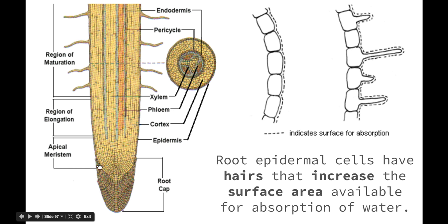We can see that our root cap is on the very end to protect these newly forming cells at the base of the roots. Root epidermal cells also have hairs that help to increase the surface area available for absorption. If we have a look at this picture here, we can see that this dotted line indicates the surface area for absorption, whereas on this second image, which shows the root hairs, we can see that we have a much longer dotted line. Therefore, in effect, it's showing that we have a much greater surface area.